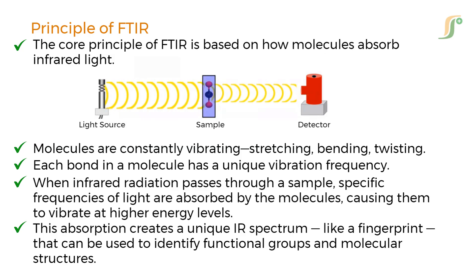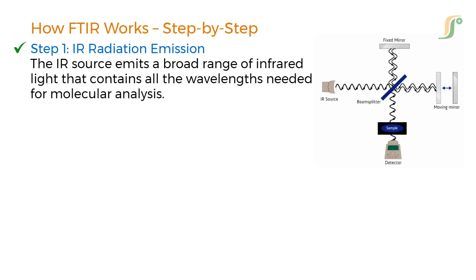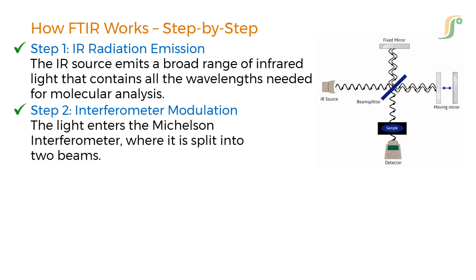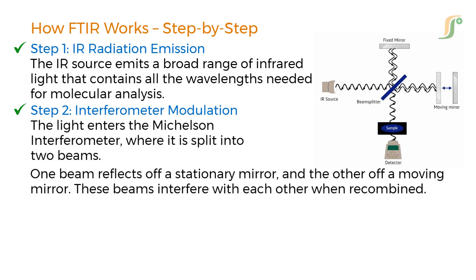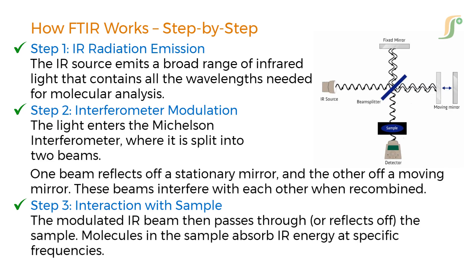Let us understand the working of FTIR broken into six clear steps. Step 1: IR Radiation Emission — the IR source emits a broad range of infrared light containing all wavelengths needed for molecular analysis. Step 2: Interferometer Modulation — the light enters the Michelson interferometer, where it is split into two beams. One beam reflects off a stationary mirror and the other off a moving mirror. These beams interfere with each other when recombined. Step 3: Interaction with sample — the modulated IR beam then passes through, or reflects off, the sample. Molecules in the sample absorb IR energy at specific frequencies.